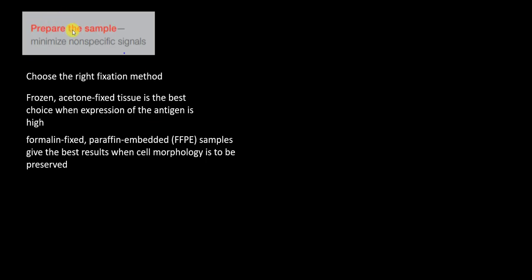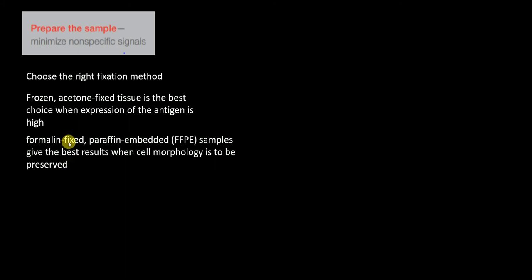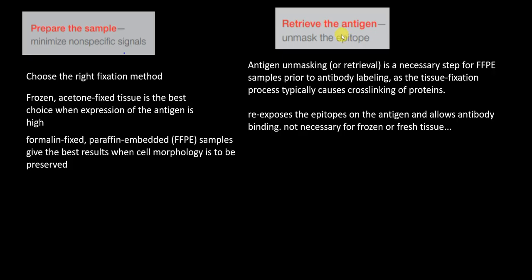The first step is sample preparation. We must prepare the sample to minimize non-specific signals by choosing the right fixation method. Frozen acetone-fixed tissue is the best choice when the expression of the antigen is high. The most commonly used method is formalin-fixed paraffin-embedded, or FFPE, which gives the best results when cell morphology needs to be preserved.